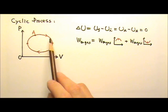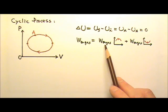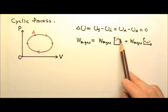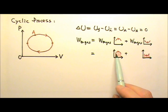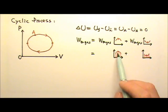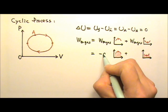We can break the process into two parts. The work done on the gas for this entire process equals the work done on the gas for the top part plus the work done on the gas for the bottom part. The work done on the gas is the area under the graph. And if the volume increases, the work is the negative area.